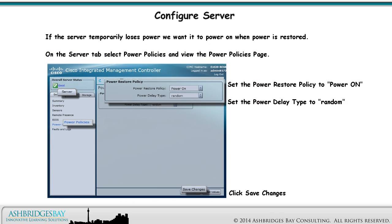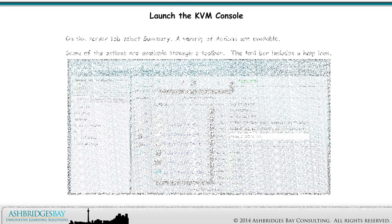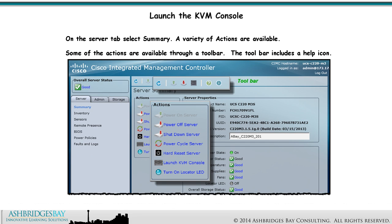If the server temporarily loses power, we want it to power on when power is restored. On the Server tab, select Power Policies and view the Power Policies page. Set the Power Restore Policy to Power On and set the Power Delay Type to Random. On the Server tab, select Summary. A variety of actions are available: Power On Server, Power Off Server, Power Cycle Server, Hard Reset Server, Launch KVM Console, and Turn On Locator LED. Some of the actions are available through a toolbar, which includes a Help icon.